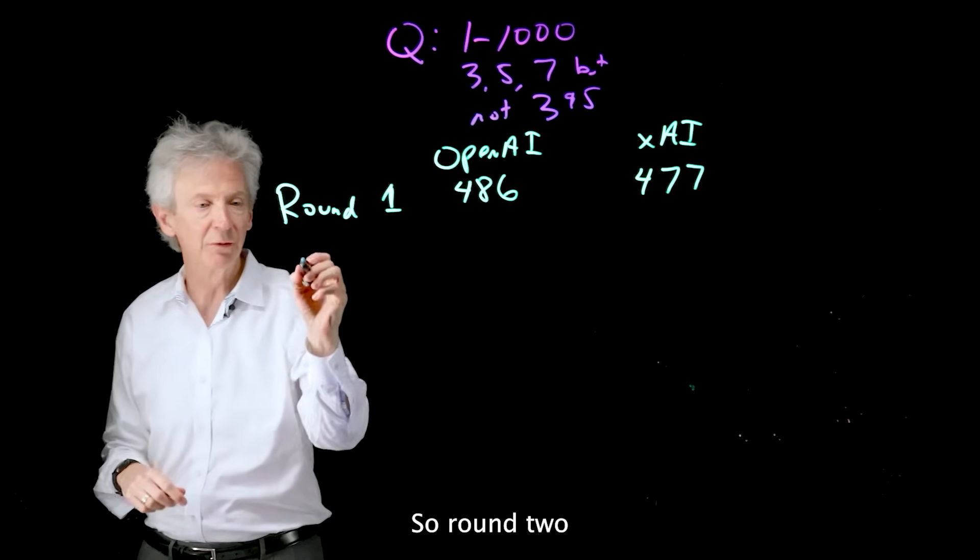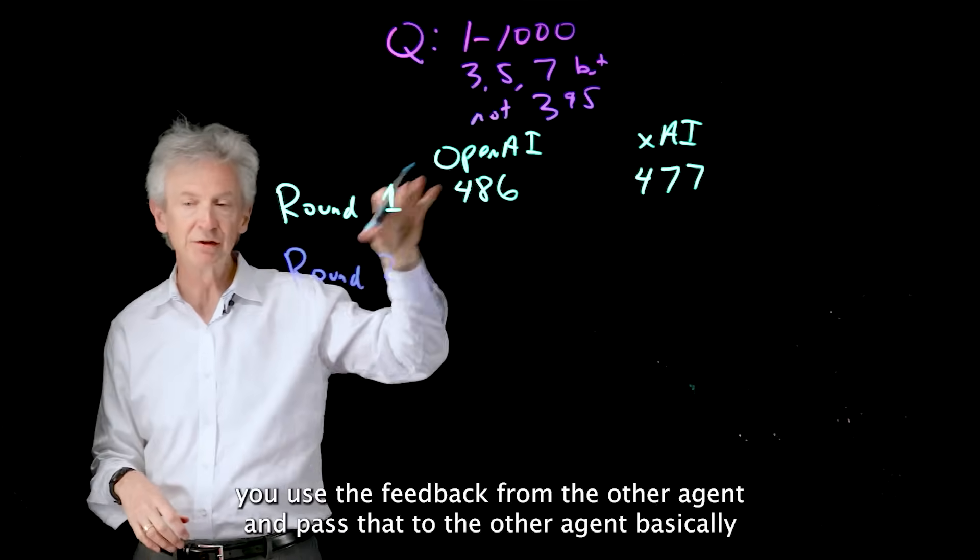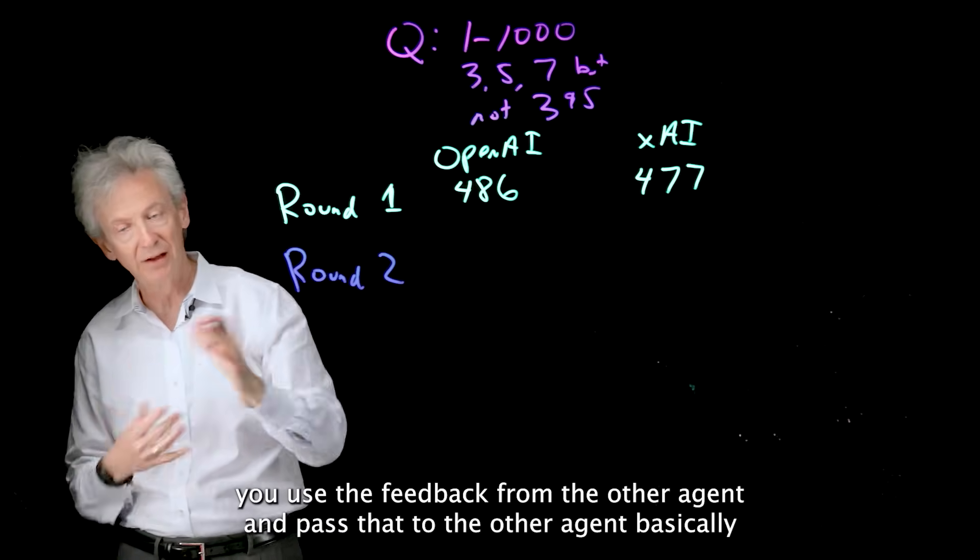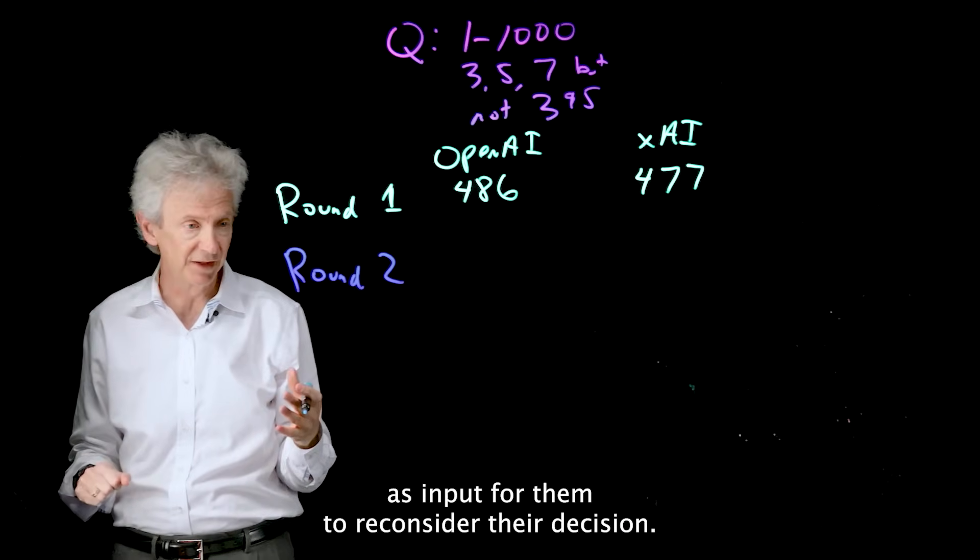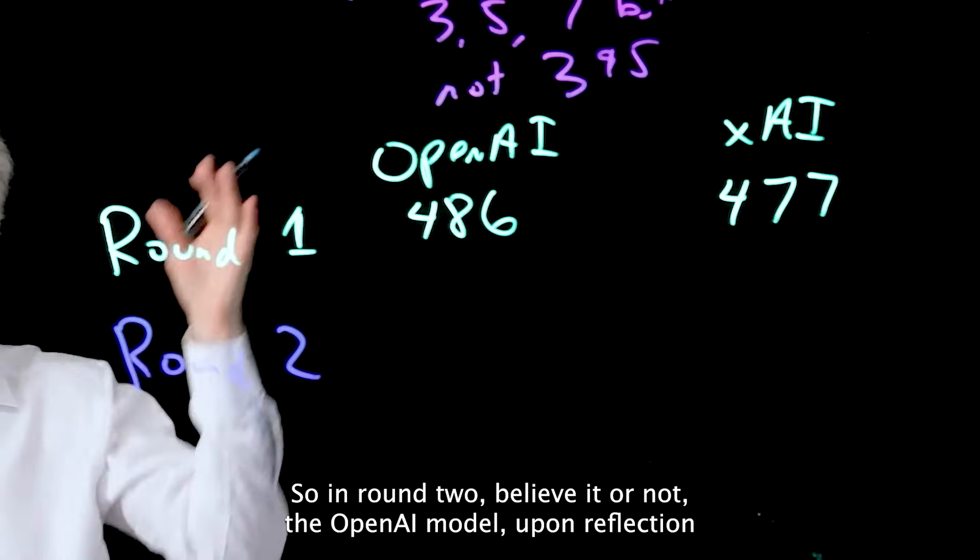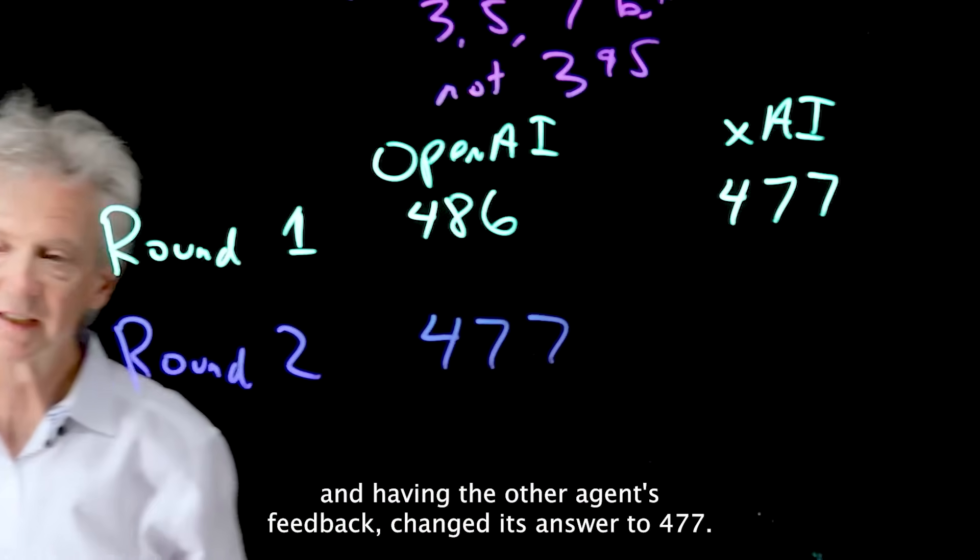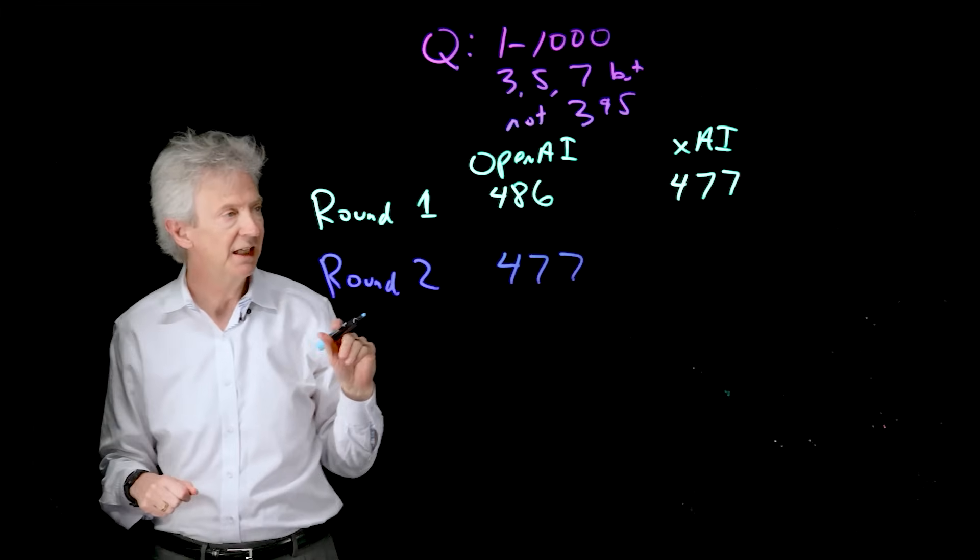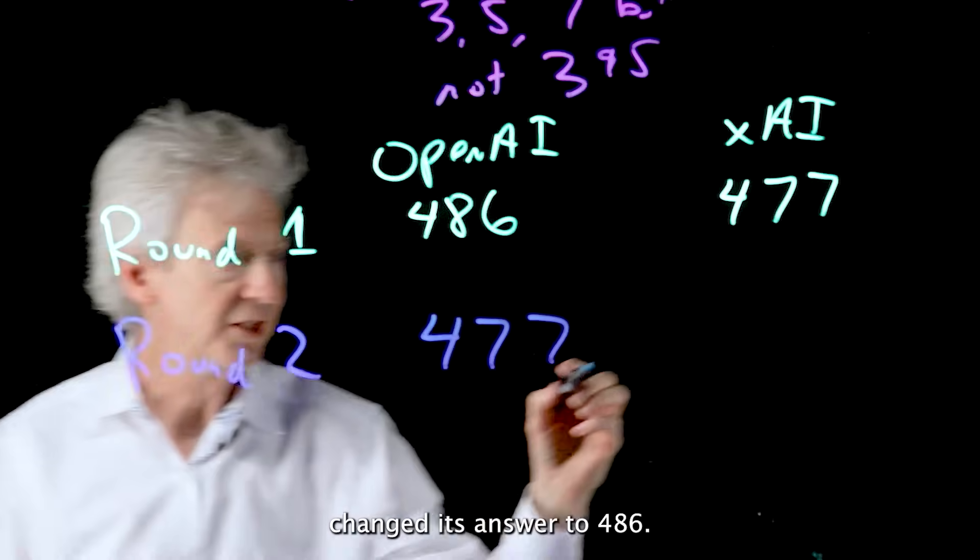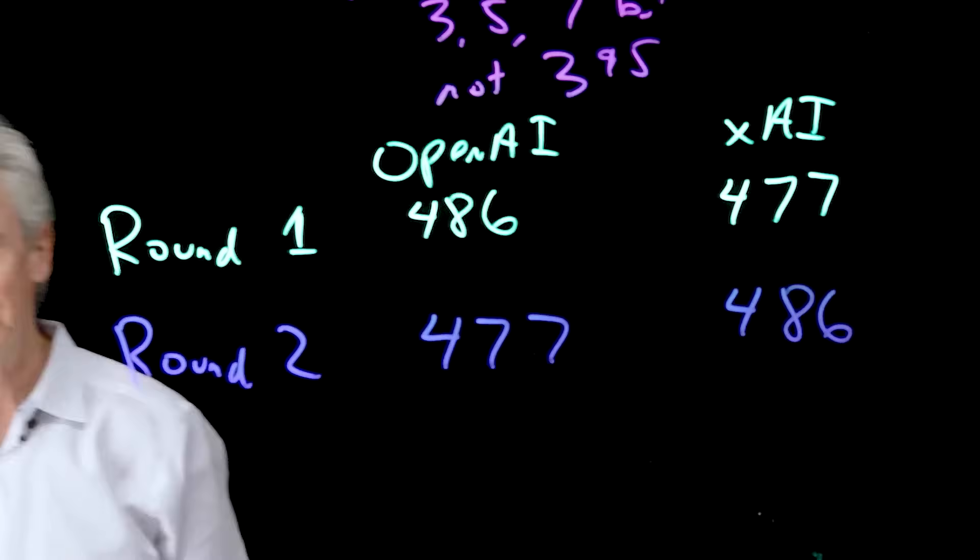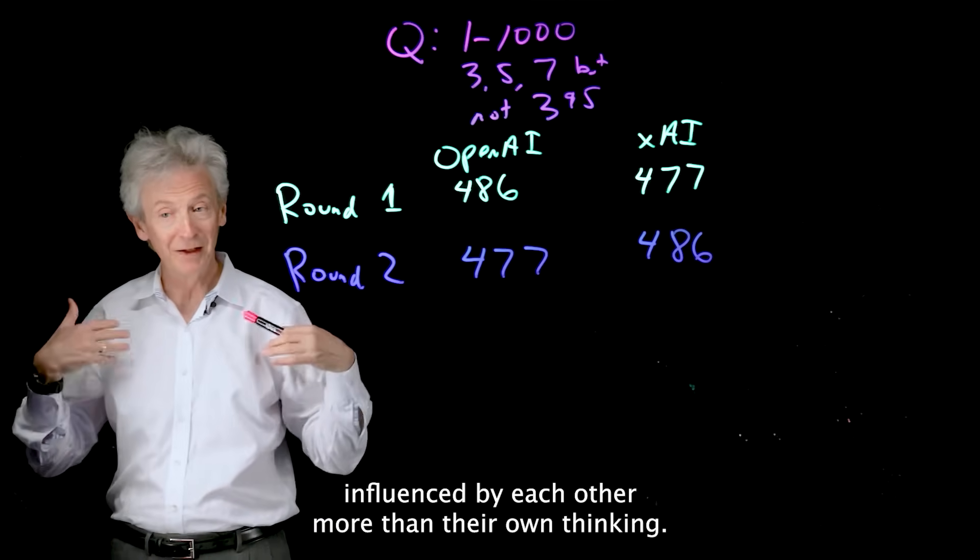So now ask again. So round two, in this case, just like the example before, you use the feedback from the other agent and pass that to the other agent as input for them to reconsider their decision. So in round two, believe it or not, the OpenAI model, upon reflection and having the other agent's feedback, changed its answer to 477. And the XAI model, upon reflection and getting feedback from the other model, changed its answer to 486. So they were both influenced by each other, more than their own thinking.